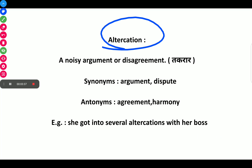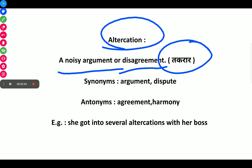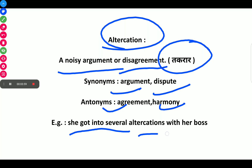The next word is Altercation, which means a noisy argument or disagreement. Synonyms of Altercation are argument and dispute. Antonyms are agreement and harmony. Example: She got into several altercations with her boss.